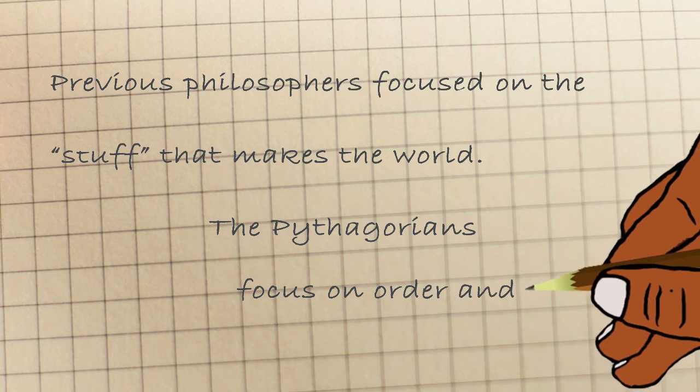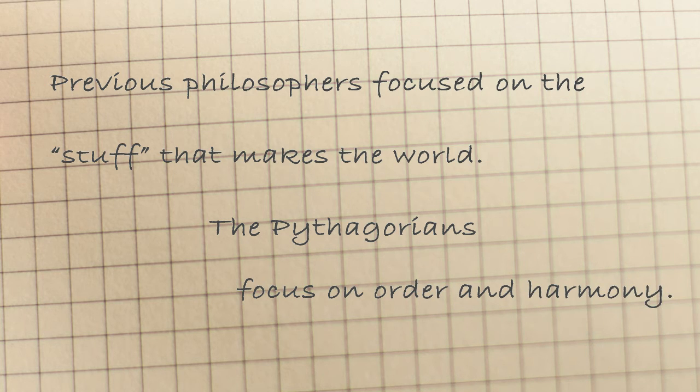And this is where numbers, dots and geometrical shapes come into play. The Pythagoreans view the cosmos as an expression of mathematical relations.